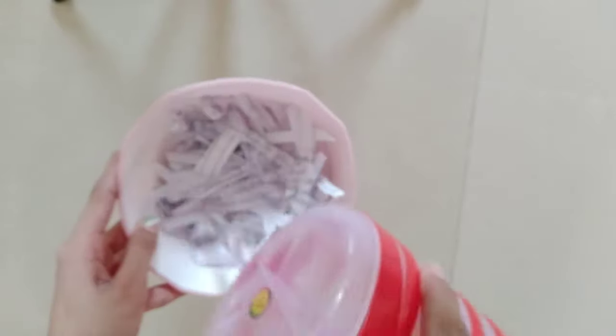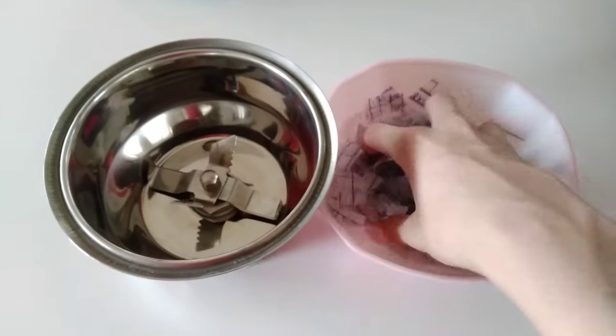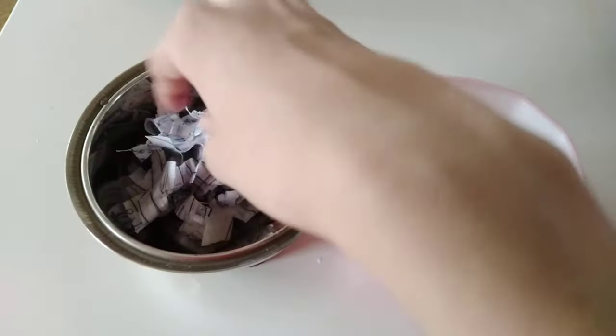Add water to the pieces and soak it for 1-2 hours. After 1-2 hours, grind the paper with water to obtain a pulp-like structure.